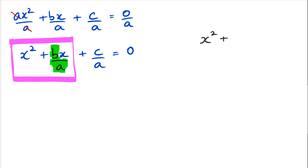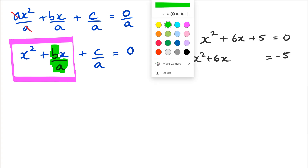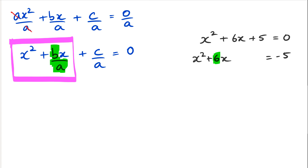Let's say we have x² + 6x + 5 = 0. We look at x² + 6x and rewrite it as x² + 6x = −5. The coefficient of x is 6; half of 6 is 3. So we can rewrite this as (x + 3)² = −5.